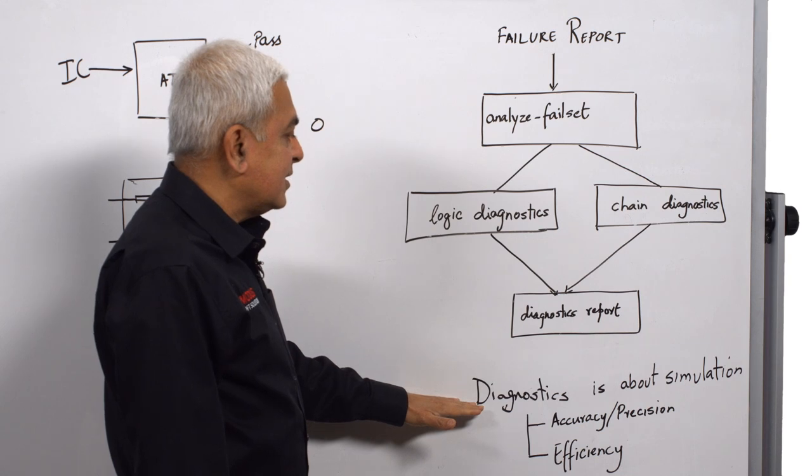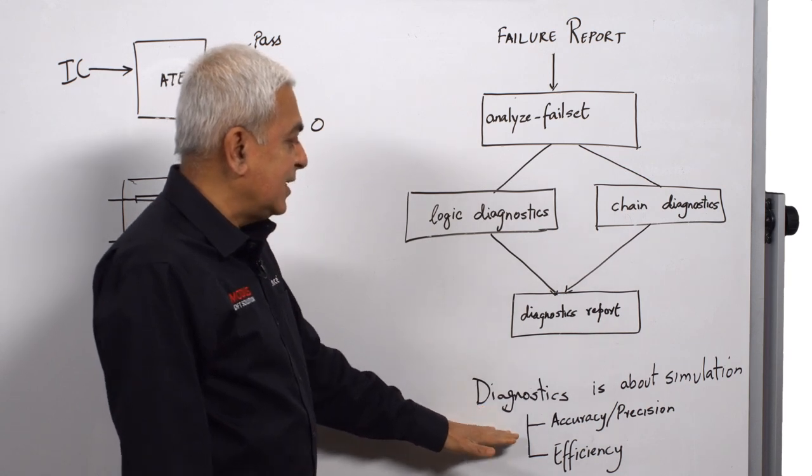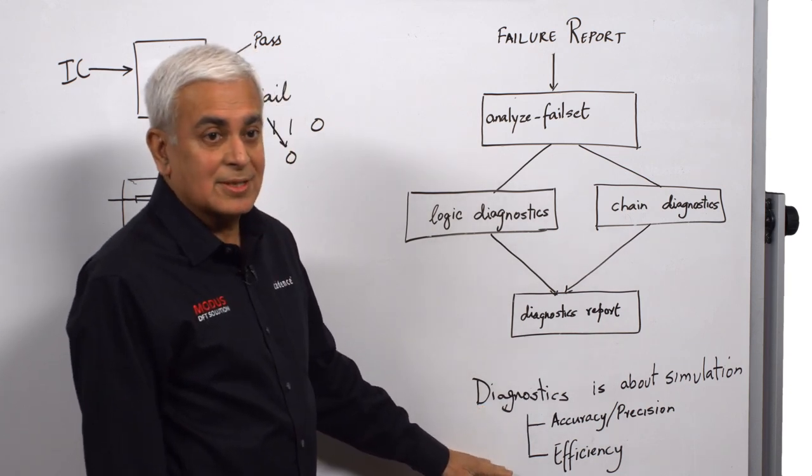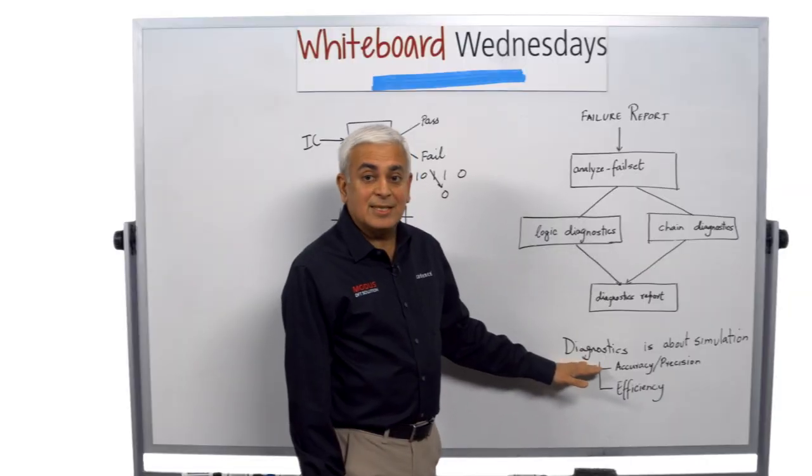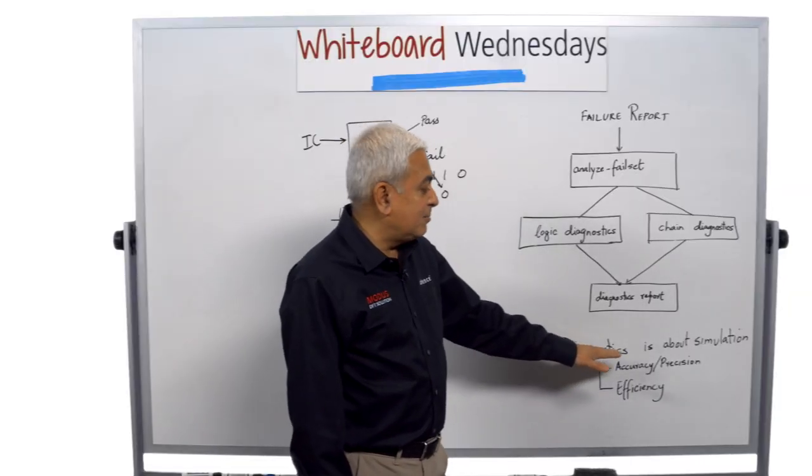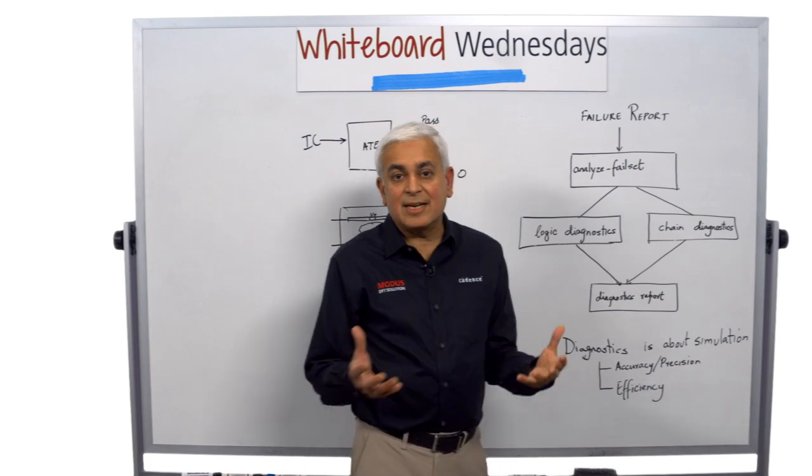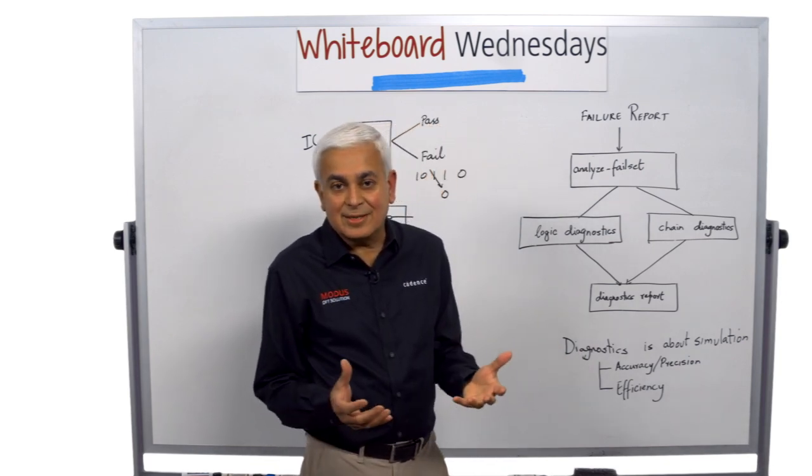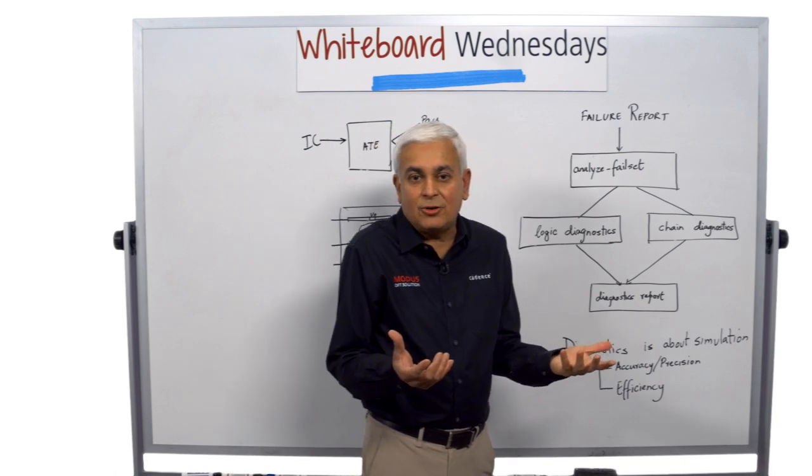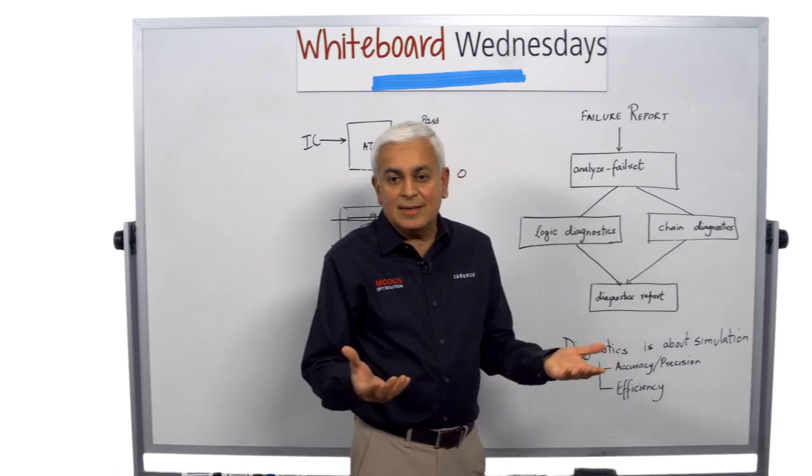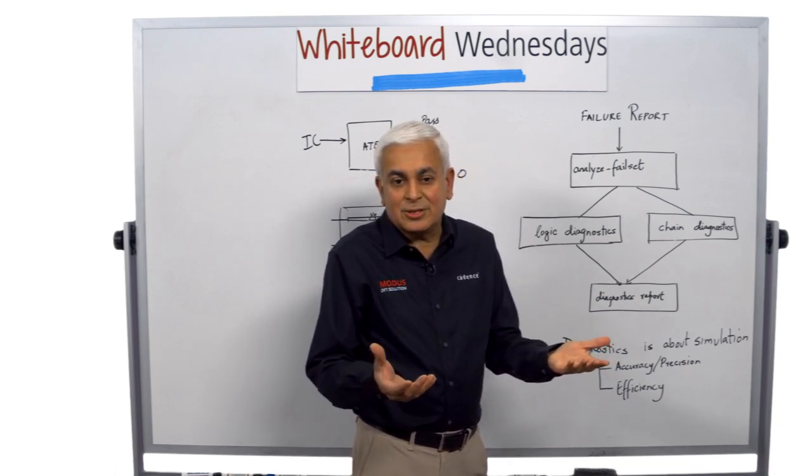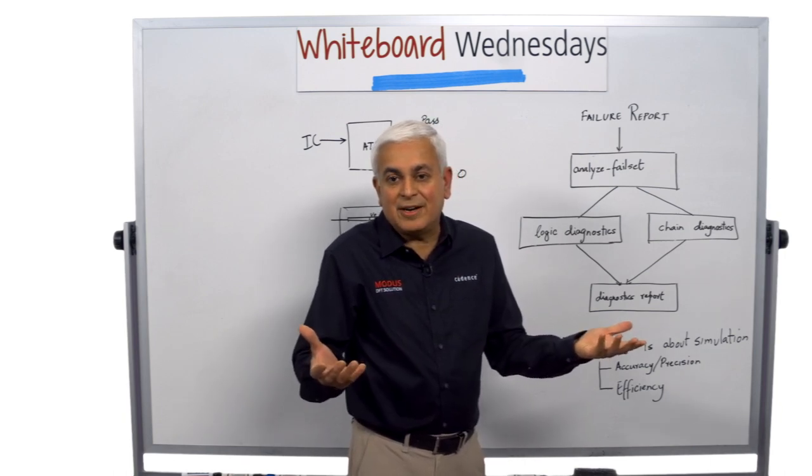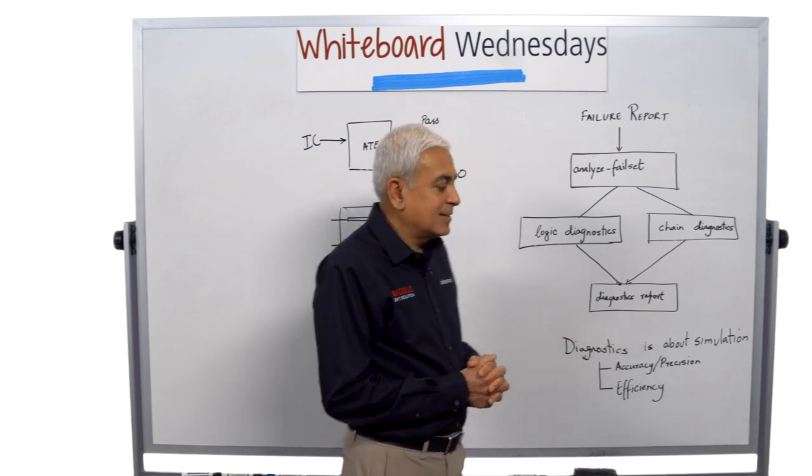So diagnostics is measured by accuracy and precision, and of course, the efficiency to get the result. Accuracy means did I get the answer? And precision means what is the size of the answer? The smaller the size of the answer, the better it is. If the answer is one fault in particular, then that answer is very precise versus saying the answer could be five different faults in the design.